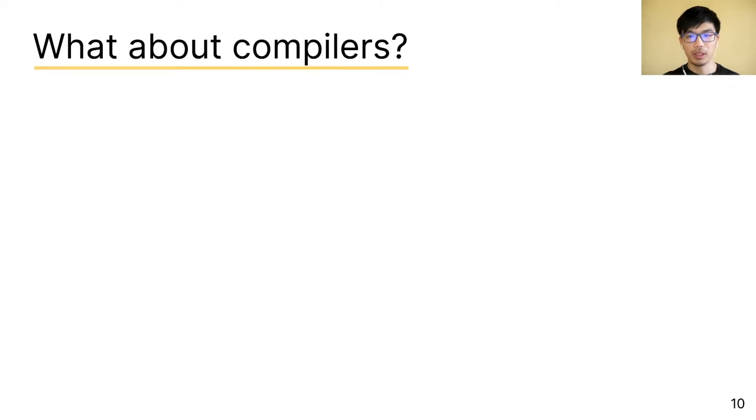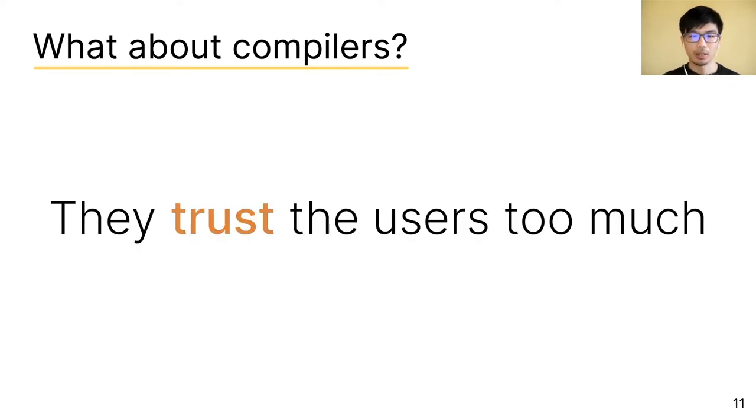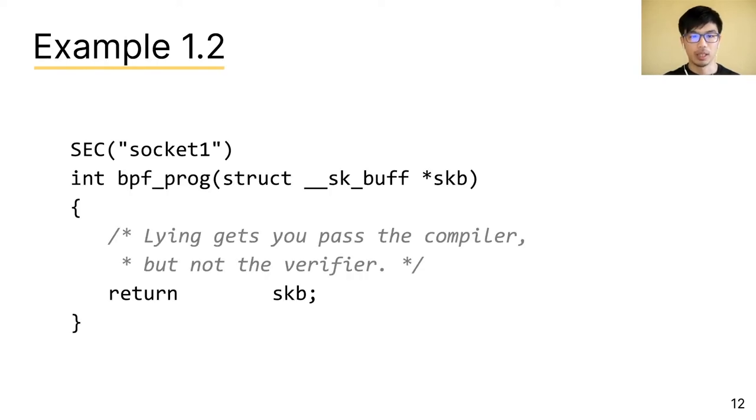So why do we need the verifier when we already have compilers? The reason is that compilers trust the user too much. To see what I mean, let's look at the same code. But this time, we can cast the socket buffer pointer to long. And in this case, the compiler will no longer complain.